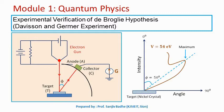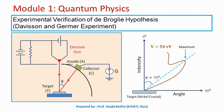The de Broglie relation lambda equal to h upon p was derived only for photons using E equal to h-nu and E equal to mc-squared. Therefore, experimental evidence was needed to accept the de Broglie hypothesis. That evidence needed to show the existence of a wave associated with some particle other than a photon, with wavelength given by lambda equal to h upon p.